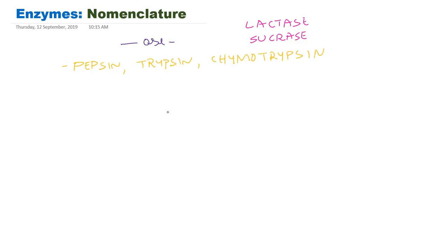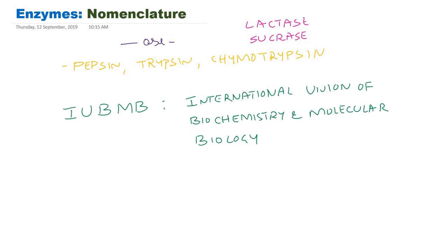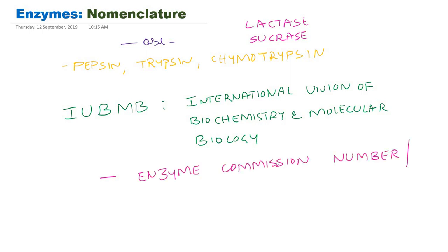So the International Union of Biochemistry and Molecular Biology came up with a unique systematic name and code number for each enzyme. This is usually called the enzyme commission number or enzyme code number — both are the same. These unique names and numbers are assigned by the International Union of Biochemistry and Molecular Biology. I will discuss the enzyme code number after covering the classification.